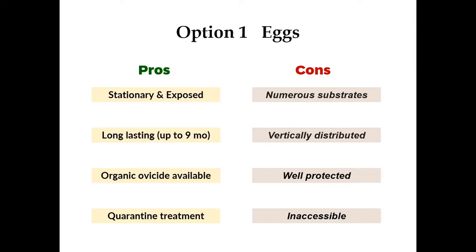The egg stage is also important for quarantine treatment. However, the downside is that eggs can be found on a lot of substrates, and they are vertically dispersed. We have data showing some eggs can be found up to 23 meters above ground on very small branches. They're well protected with wax, and it's not possible to treat them in the woods. Even in urban cities, it's very difficult to treat high trees if you have eggs on them.